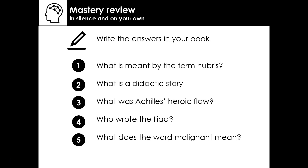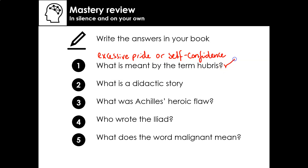Now we're ready to go through and mark our answers. If you have a different coloured pen, that can be a really useful way of checking and correcting as we go. The first question was: what was meant by the term 'hubris'? We looked at this when we've been studying Greek mythology. Hubris refers to excessive pride or self-overconfidence. Give yourself a tick if you got that one right.